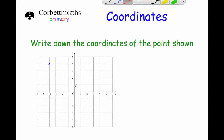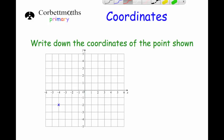Our next point: from the origin we're going 4 to the left, so that's minus 4, and then four up — so the point is (-4, 4). And our last question: this point here, from the origin it's four to the left — minus 4 — and two squares down — minus 2. So that's the point (-4, -2), and that's it.